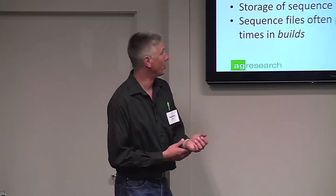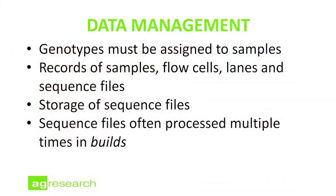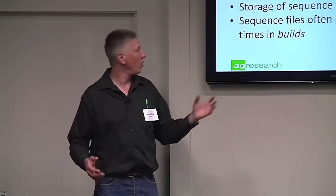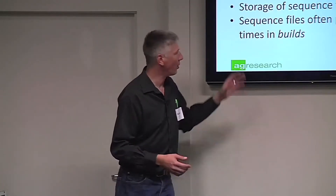Data management is also huge. Genotypes must be assigned not just to samples, but to the right samples. This means you need to keep records of your samples, flow cells, lanes, and sequence files in an organized fashion, so you can trust that when you generate a key file, it's correct. You need a plan for storing sequence files, and sequence files are often processed multiple times in what we call builds. As you add more diversity into the GBS system, you get more markers, so we will process the same sequence files again as we add more samples to capture that diversity.